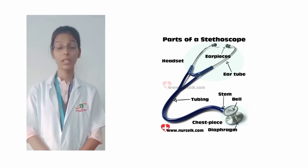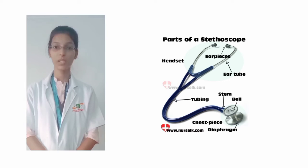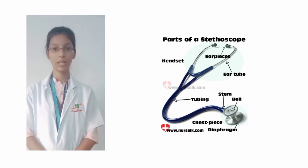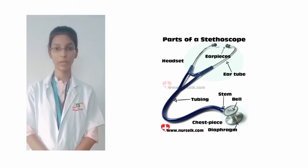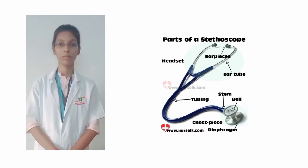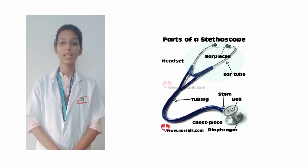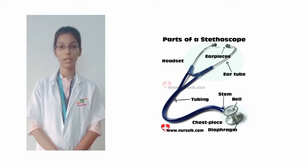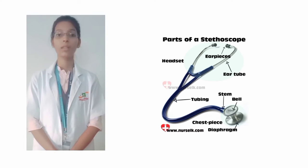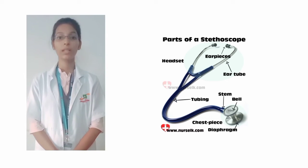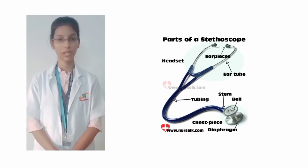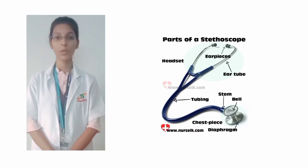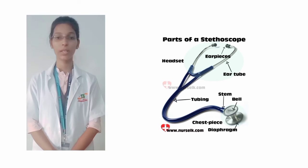Bell: The circular end of the chest piece is the bell. It detects sounds with low frequency. Stem: The stem is the part that connects the chest piece to the stethoscope tubing. Tubing: The stethoscope tubing is a flexible rubber, and this part is responsible for transferring the sounds.